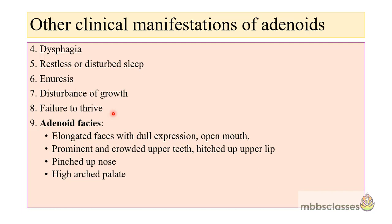Patients with significant nasal obstruction due to enlarged adenoids have typical characteristic facial features called adenoid facies. The child will have an elongated face with a dull expression and an open mouth. Because of frequent mouth breathing, they develop prominent and crowded upper teeth and a hitched-up upper lip. They will have a pinched nose due to disuse atrophy of the alae nasi muscle. The child will also have a high arched palate, leading to dental and maxillary deformity.